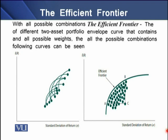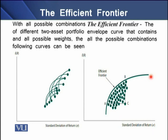Now, coming to the efficient frontier. On the screen's left panel, you can see curves combining certain portfolios of assets — drawn with all possible combinations of different two-asset portfolios and all possible weights. On the right panel of the screen, there is a thick curve encompassing all possible portfolios. This thick curve, known as the efficient frontier, is essentially the envelope curve containing all possible combinations seen on the left panel.